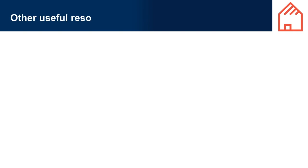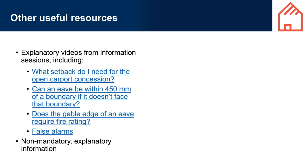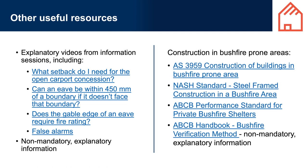Other useful resources. Standards are mandatory when referenced within the NCC. For example, if you choose to use the DTS provisions of H7 D4 to comply with requirements for a steel-frame building in a bushfire-prone area, then compliance with the NASH standard would be mandatory, or alternatively AS 3959. It is possible to use an alternative performance solution instead. Handbooks and videos are non-mandatory resources that provide guidance and help, but nothing in them needs to be complied with in order to comply with the NCC.